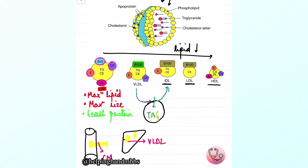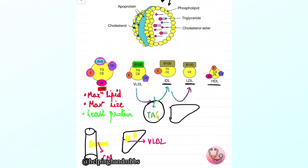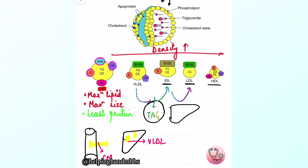LDL is formed from IDL — when IDL delivers its lipid to the liver or another organ. More of the triacylglycerol is lost, so density increases again, forming low density lipoprotein relative to IDL. The special molecule on LDL is ApoB100, just as with VLDL and IDL — it acts like an identity card always present on all three, even as lipid content decreases.